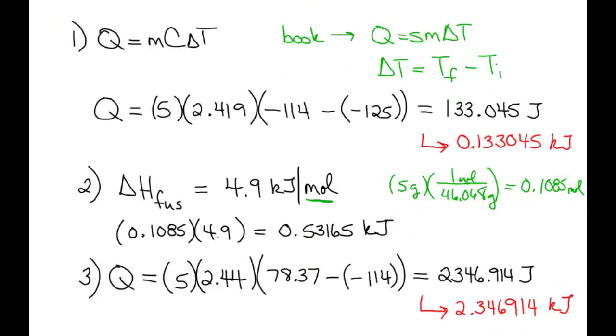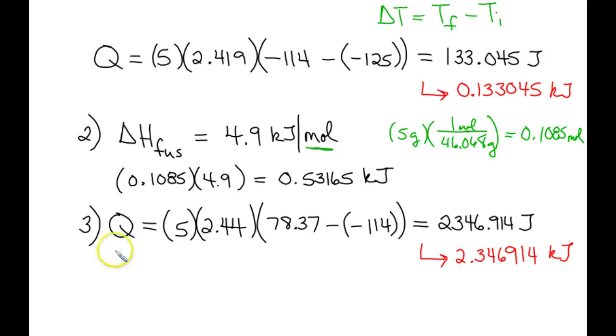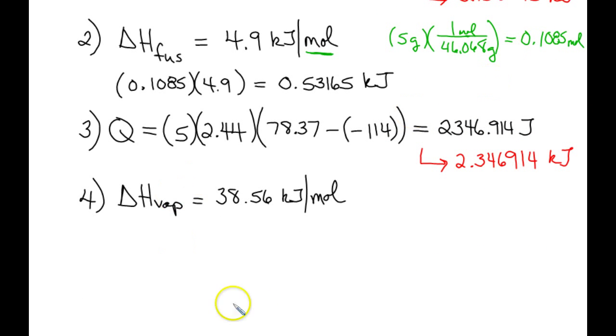Back to step four, boiling. We've hit another phase change. Now, for this phase change, we do need the enthalpy of vaporization, which at the top of the screen was 38.56 kilojoules per mole. And again, I'm pointing out that this is going to involve moles, which we calculated in step two. So we can just plug in 0.1085 times 38.56. And that will give us 4.18376 kilojoules.